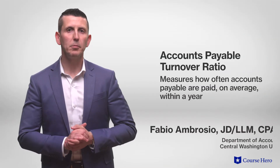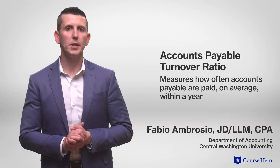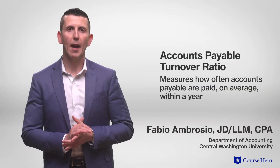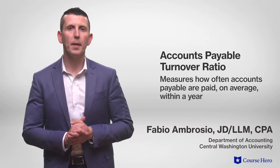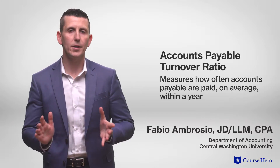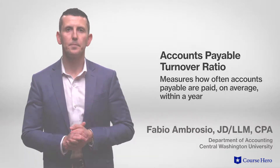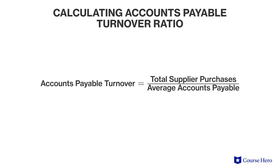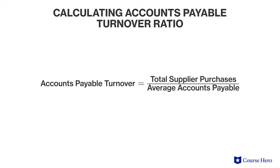The accounts payable turnover ratio measures how often accounts payable are paid on average within a year. The accounts payable turnover ratio can be computed by dividing total supplier purchases on credit by the average accounts payable balance.